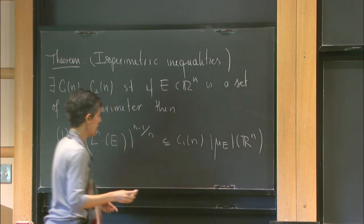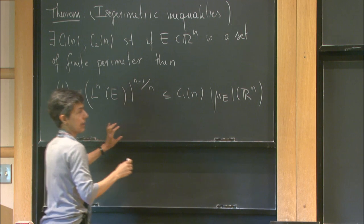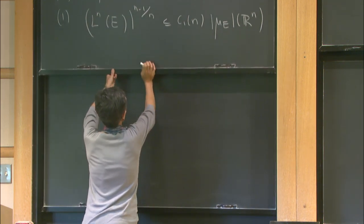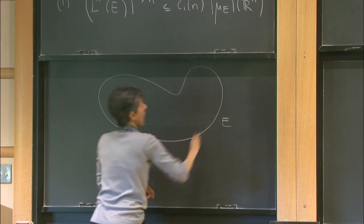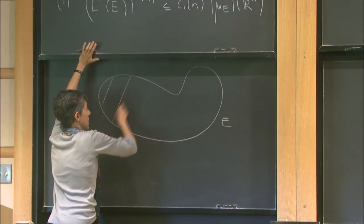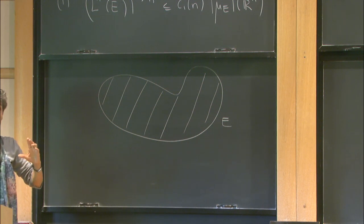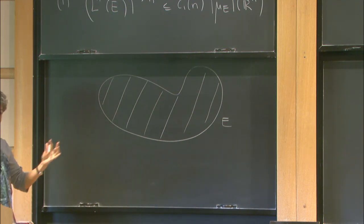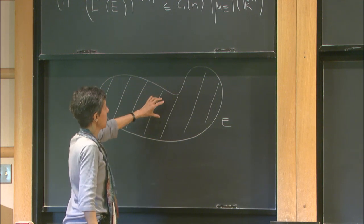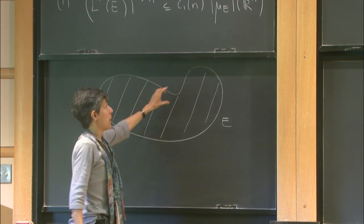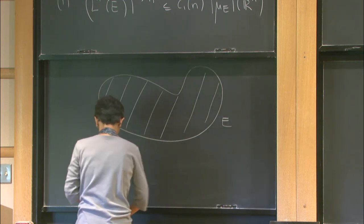What is this saying? Think of E as a C1 domain. This is telling you: if you measure the area of the C1 domain, no matter which C1 domain it is — you can make it look like a flower, a rabbit, whatever you want — provided it is at least C1 or a set of locally finite perimeter, the area enclosed is bounded by a fixed constant times the perimeter. The constant is always the same.